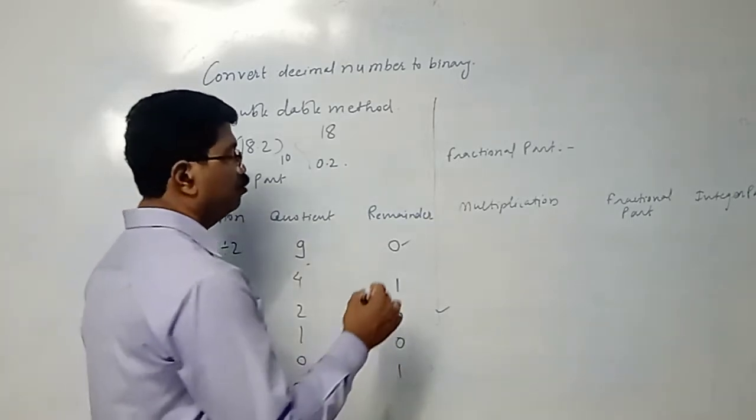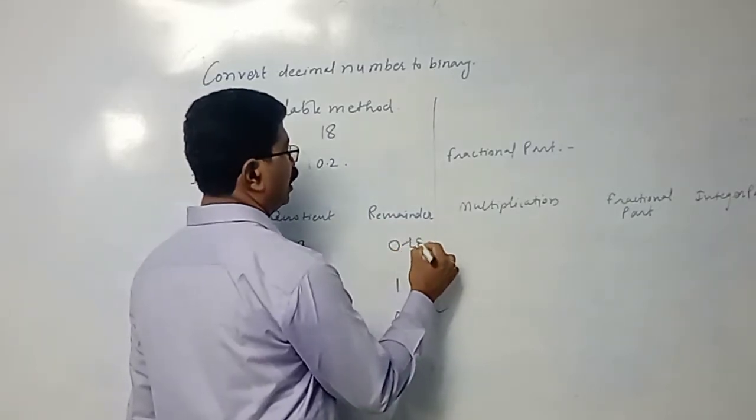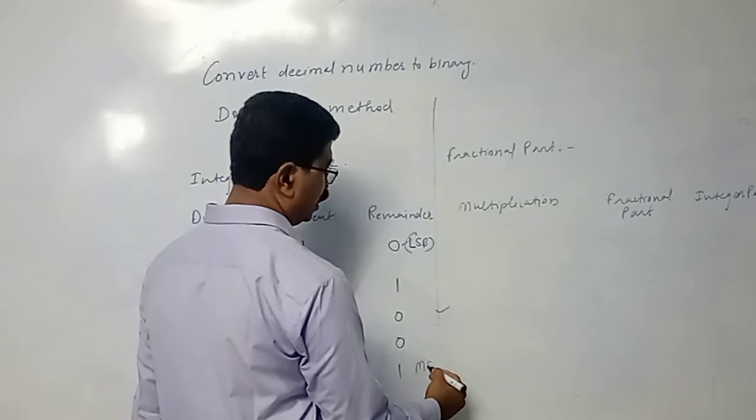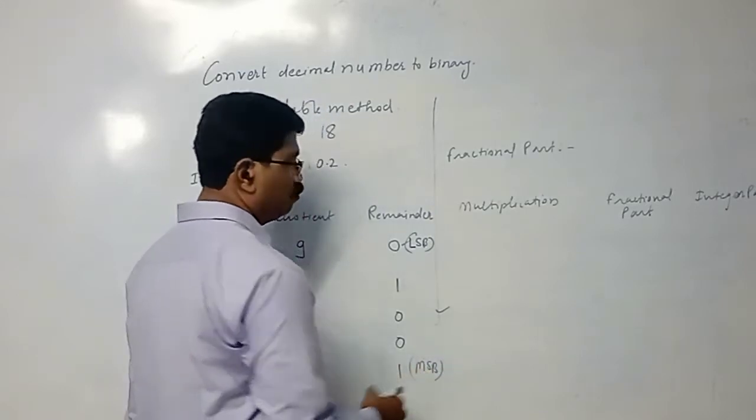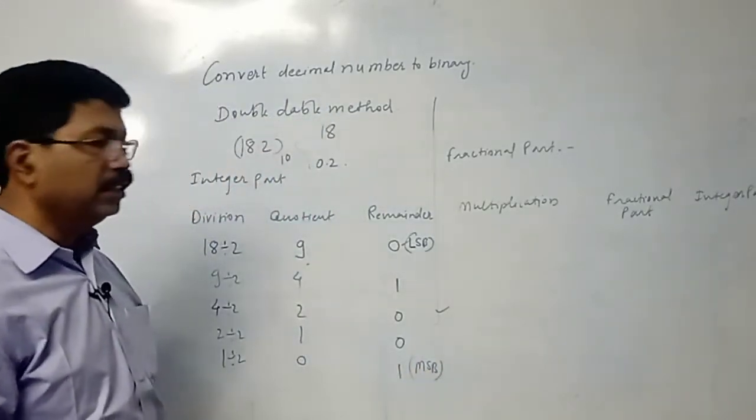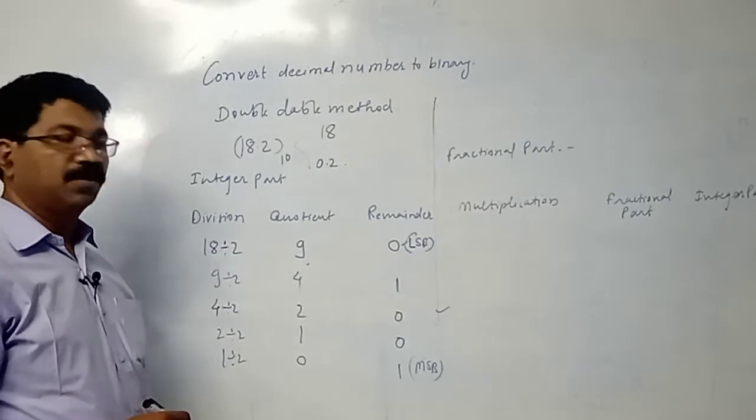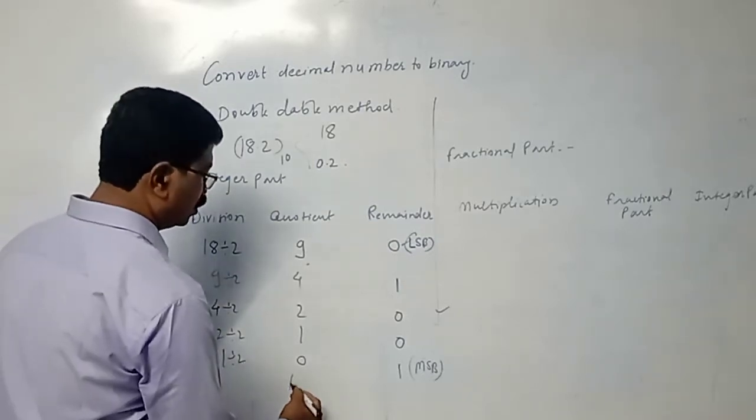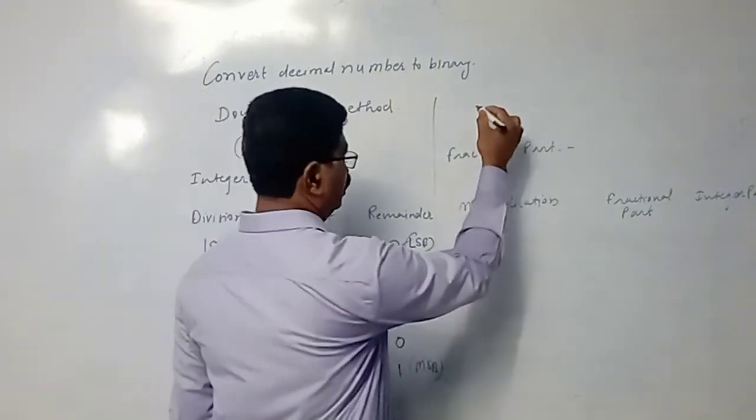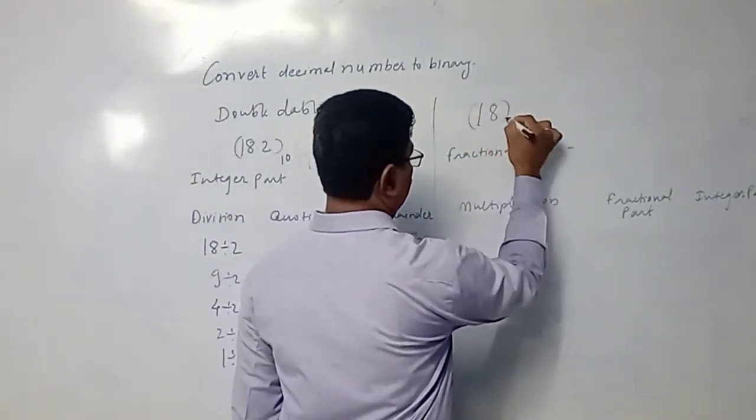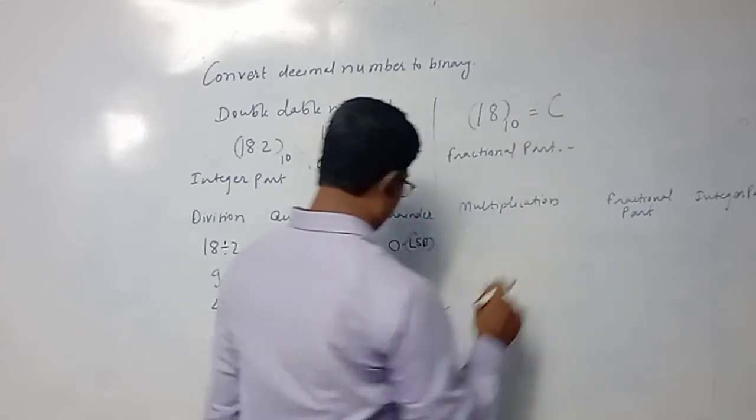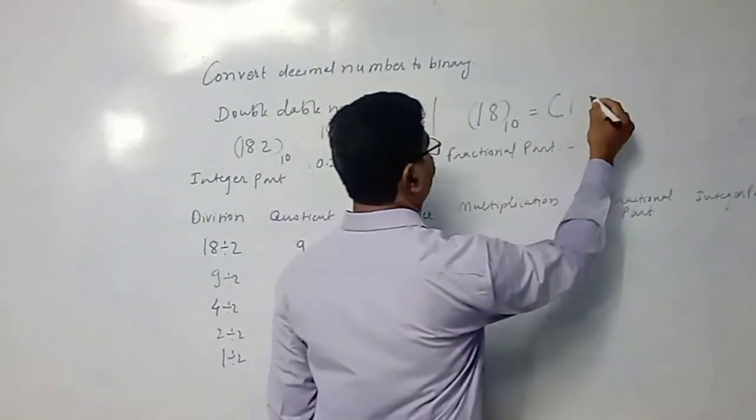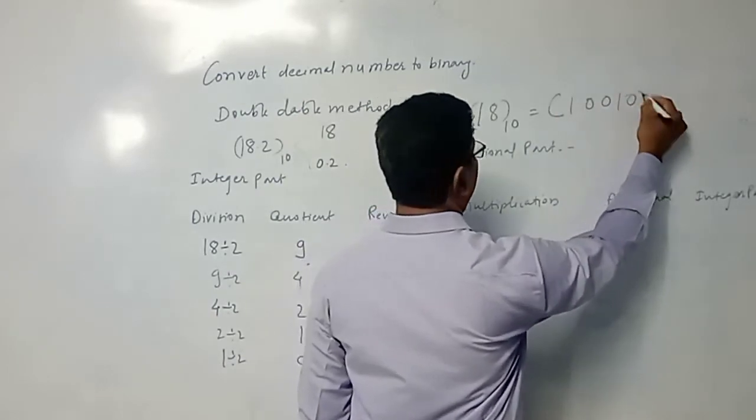So when quotient is 0, the first remainder that we obtain you have to consider as LSB, and last remainder that we obtain you have to consider as MSB. MSB is most significant bit, LSB is least significant bit. So 18 in decimal is written as 10010 in binary.